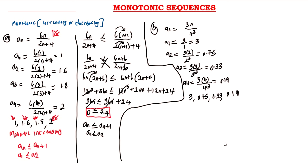Looking at the sequence 3, 0.75, 0.33, 0.19 — this sequence is decreasing. The first term is 3, the second term 0.75 is less than the first, the third term 0.33 is less than the second, and the fourth term 0.19 is less than the third. So this is a monotonic decreasing sequence.